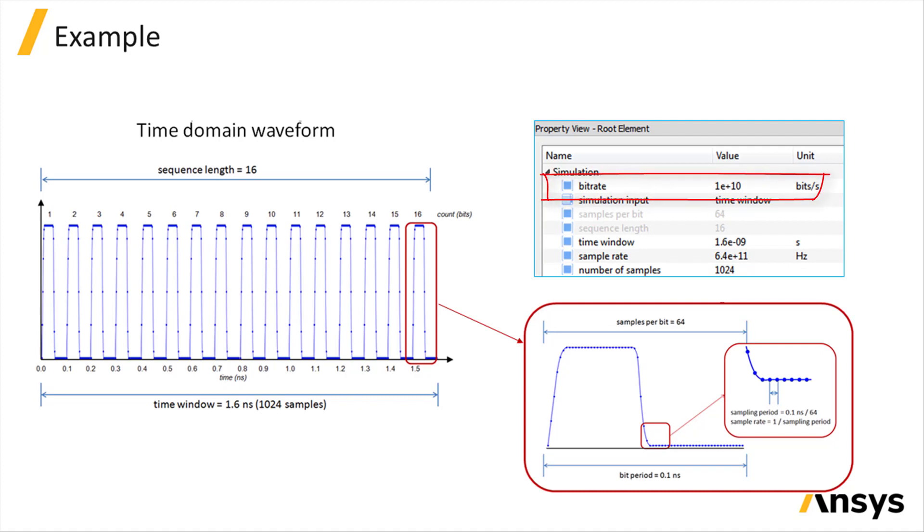The bit rate is set to 1 times 10 to the 10 bits per second. So the sequence length is 16 bits, as it's calculated as the time window times the bit rate.